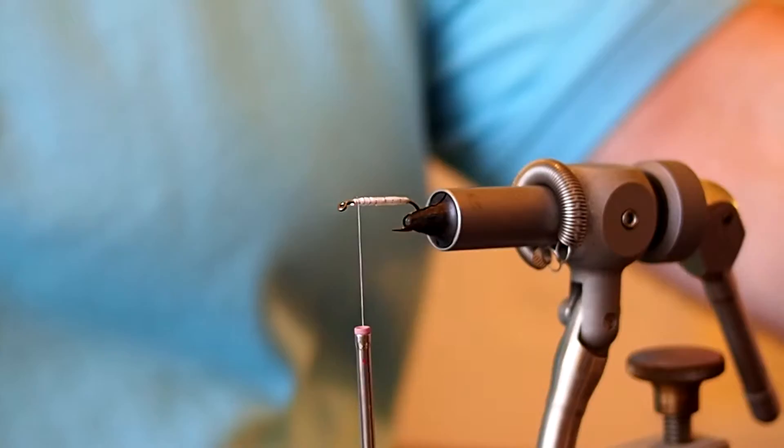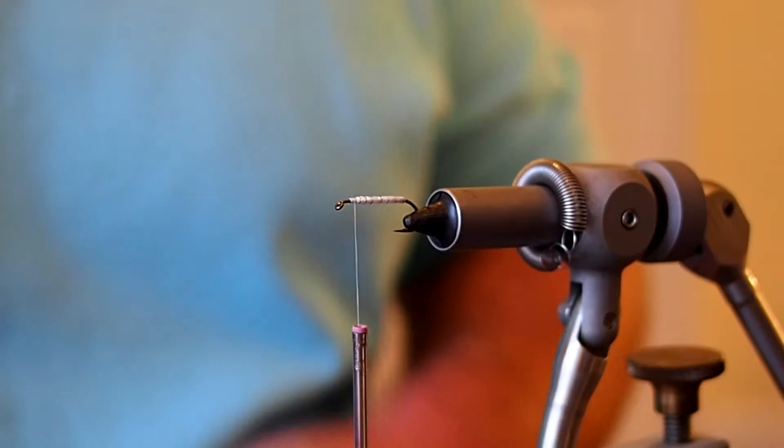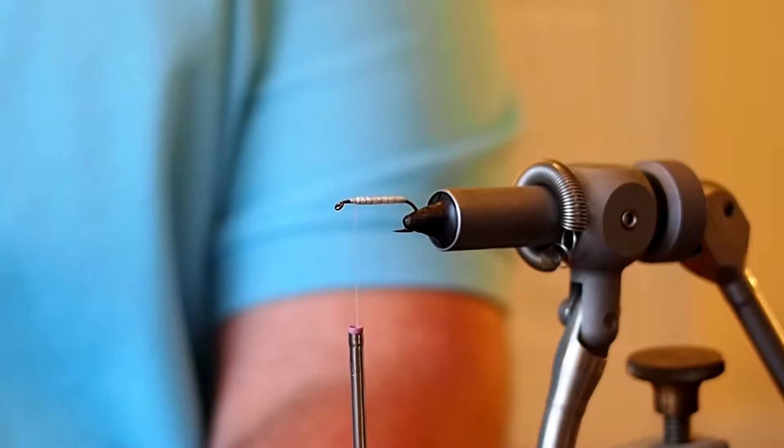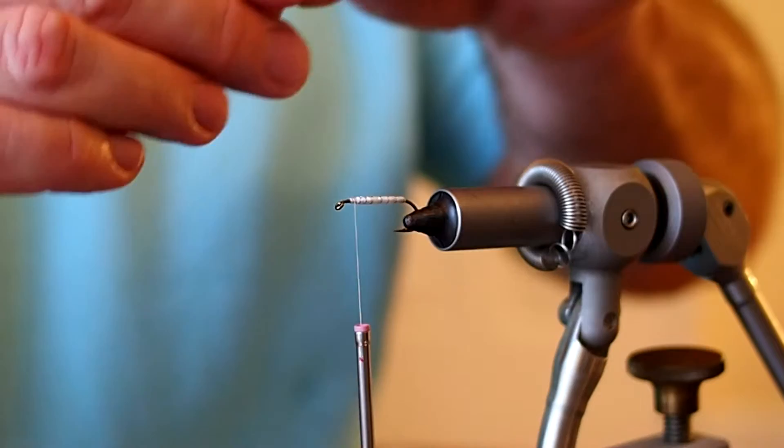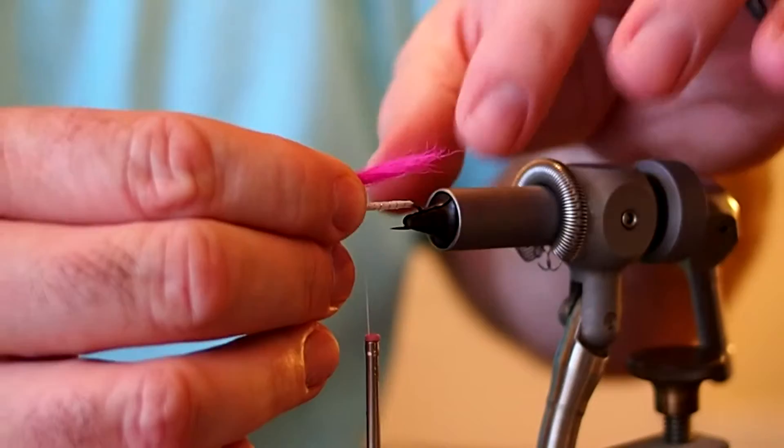Alright, for the wing I'm going to be using some hot pink kip tail. Cut a section of that. Just going to pull out the fluff and grab it by the tips and pull out any of the short hairs. And you want the wing to basically be just about the length of the hook shank, maybe just slightly longer.